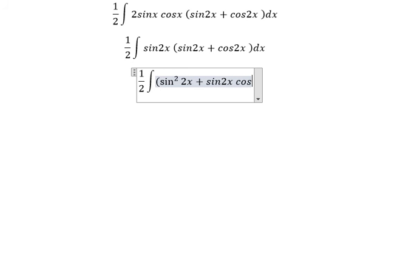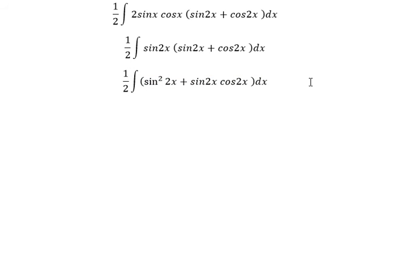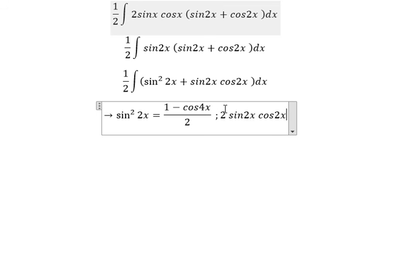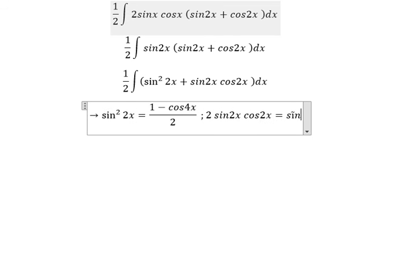We will apply two formulas here. The first one: sine 2x square equals to 1 minus cosine 4x over 2. And we have 2 sine 2x cosine 2x equal to sine 4x. Because we don't have the number 2 here, so we divide both sides with number 2.